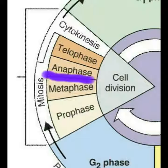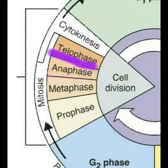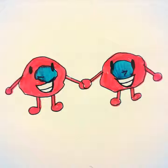Followed by anaphase is the final phase of mitosis, which is telophase. In this phase, each sister chromatid has a nucleus that is fully developed. Followed by telophase is cytokinesis, which allows each cell to be fully and completely developed.